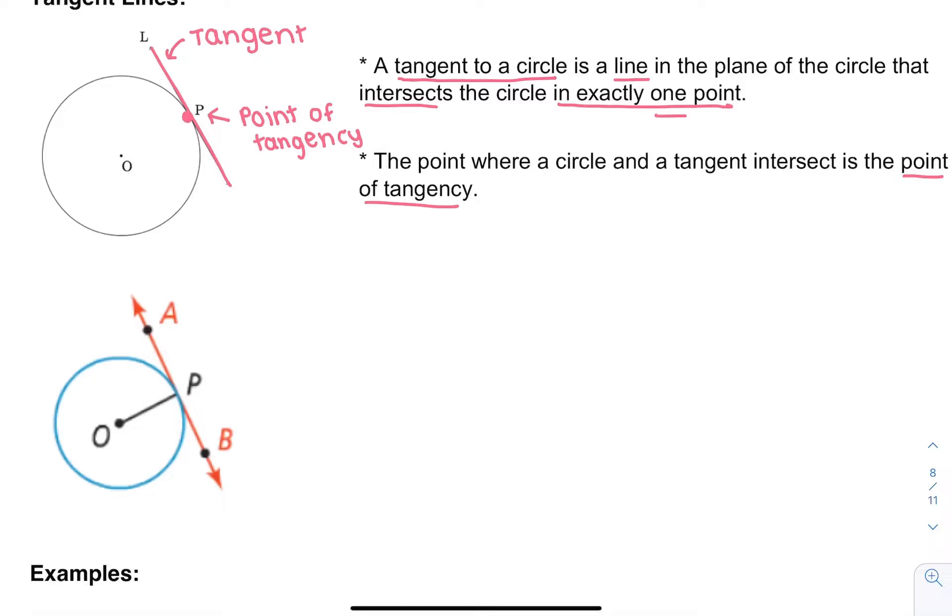We also get this really cool theorem from this. If we have this tangent line AB, and if a line is tangent and it intersects with this radius at P, at this point of tangency, it intersects.